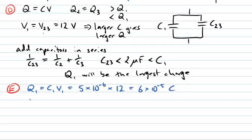Now what about Q2? Well, we know Q2 and Q3 are the same, and they must be equal to the capacitance in that branch, which we call C23, multiplied by the voltage in that branch. Now we know the voltage in that branch is 12 volts.